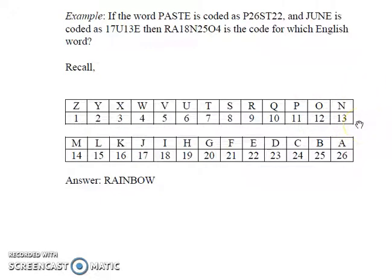Therefore, here 18 is the code word for I, 25 is the code word for B, and 4 is the code word for W. Therefore, our answer is RAINBOW.